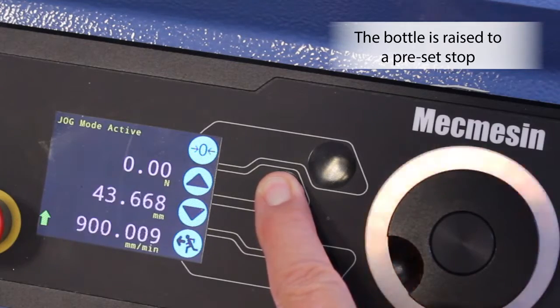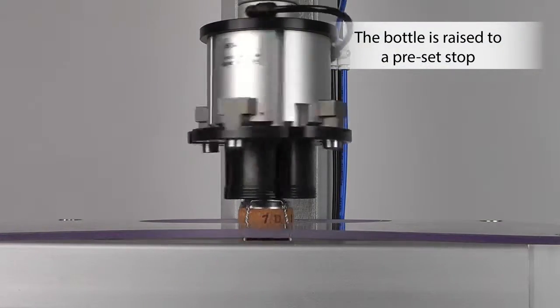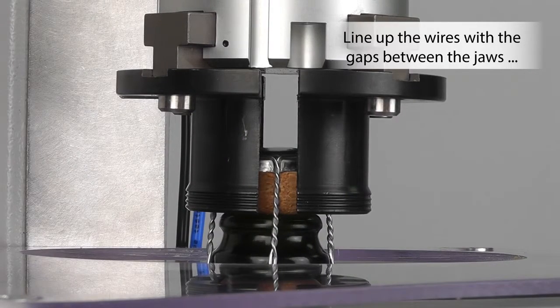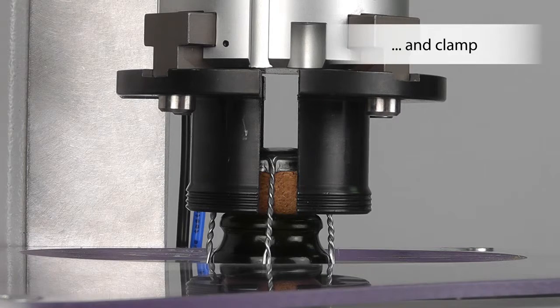The motor raises the bottle to a preset stop and the closure is then firmly clamped in the upper grip.